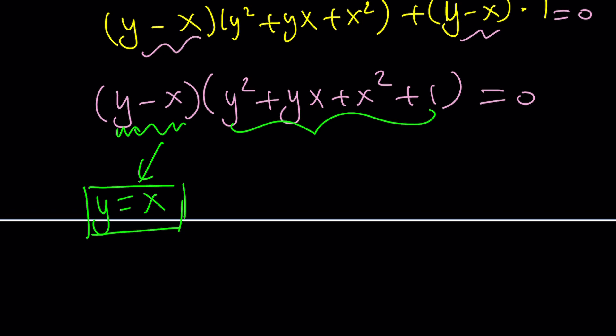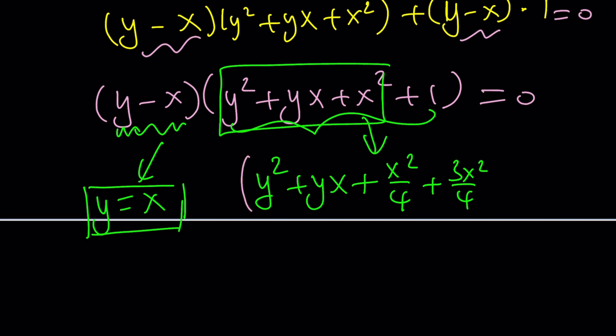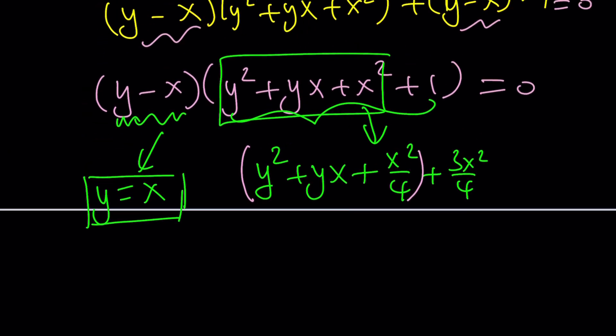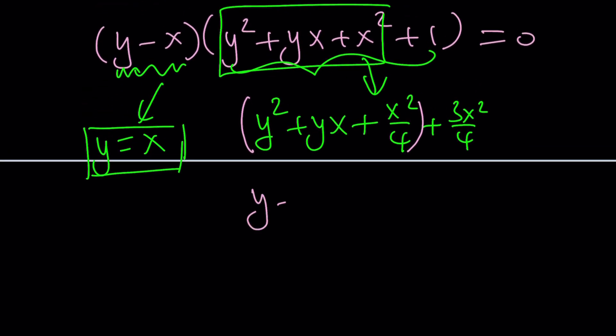So first of all, I can write this part as y squared plus yx. Now, I'm going to complete the square. So I'm going to write this as x squared over 4 plus 3x squared over 4. Now, you might be questioning, why did I do that? Because this becomes a perfect square. And if you get used to these things, they're very easy to see. It takes some effort. But this is (y plus x over 2) squared. And that's 3x squared over 4. And of course, I have a 1 as well.